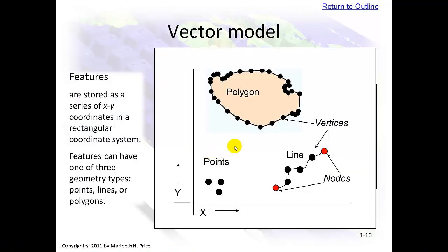Vector models are stored as a series of XY coordinates in a rectangular coordinate system. They can have one of three types: point, line, or polygon. A polygon consists of lines, which consist of points or nodes. Here we have nodes at the ends of the line, and then this is a connected point and line.